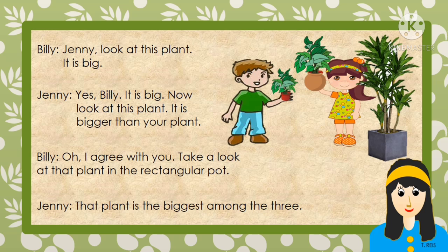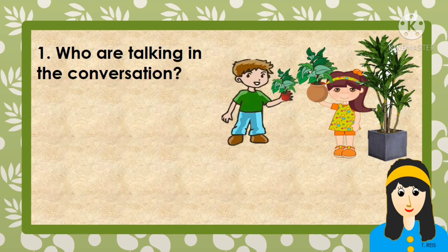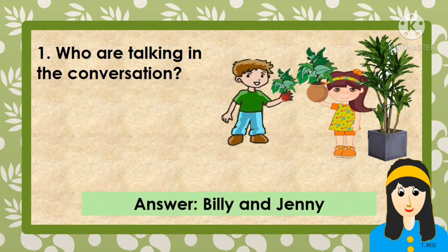Billy said: 'Jenny, look at this plant. It is big.' Jenny said: 'Yes, Billy, it is big. Now look at this plant — it is bigger than your plant.' Billy said: 'Oh, I agree with you. Take a look at that plant in the rectangular patch.' Jenny said: 'That plant is the biggest among the three.'